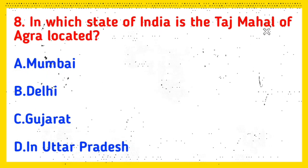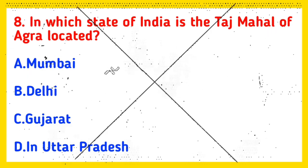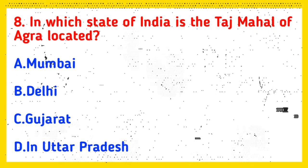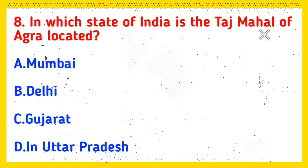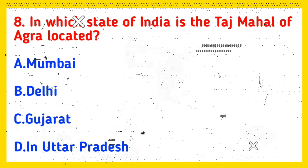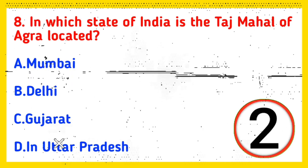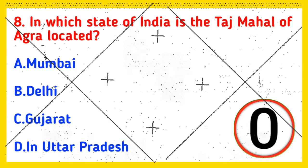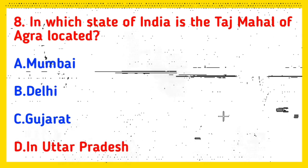Q8: In which state of India is the Taj Mahal of Agra located? Option A: Mumbai, Option B: Delhi, Option C: Gujarat, Option D: Uttar Pradesh. And the correct answer is Option D, Uttar Pradesh.